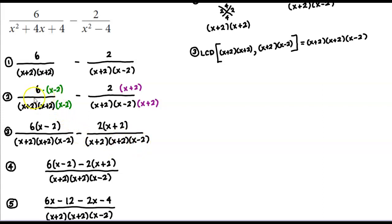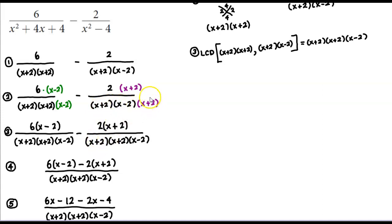In step 2, we look at what's missing from each original denominator compared to the LCD. The first denominator, x plus 2 times x plus 2, is missing x minus 2, so we multiply its numerator by x minus 2, giving us 6 times x minus 2. The second denominator, x plus 2 times x minus 2, is missing x plus 2, so we multiply its numerator by x plus 2, giving us 2 times x plus 2.